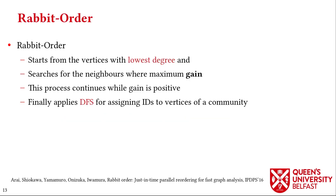Rabbit Order is the next reordering algorithm we investigate. It starts from low-degree vertices and for each vertex searches for the neighbor with the maximum gain for merging. After constructing communities, Rabbit Order applies DFS to assign IDs to vertices in each community.